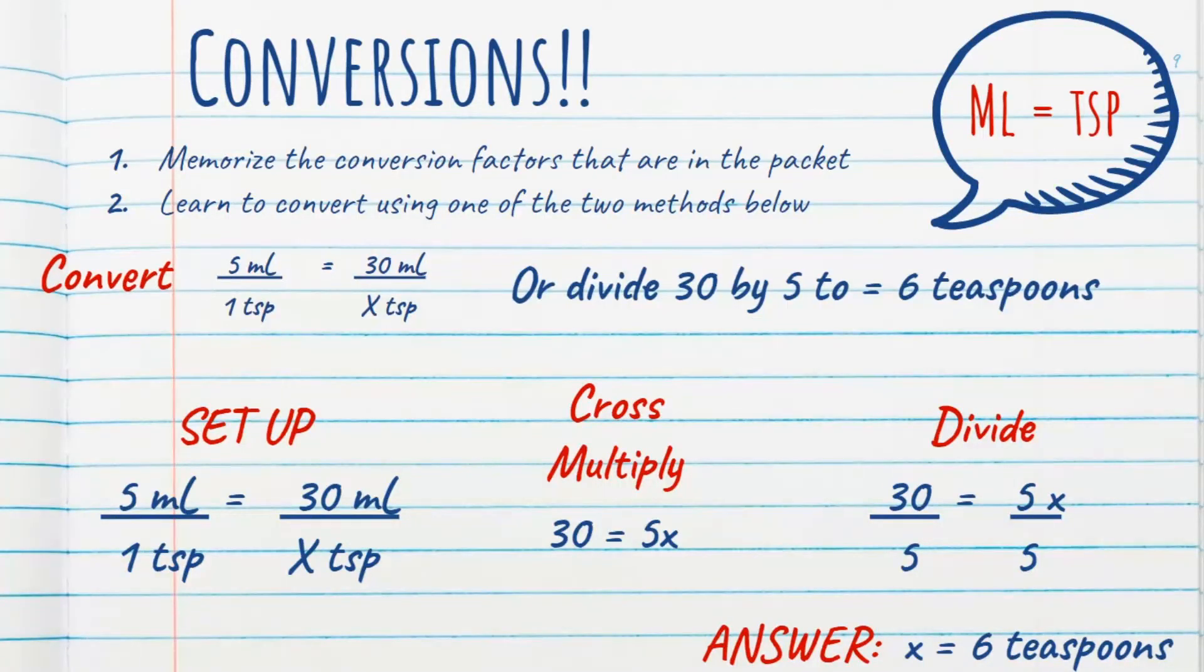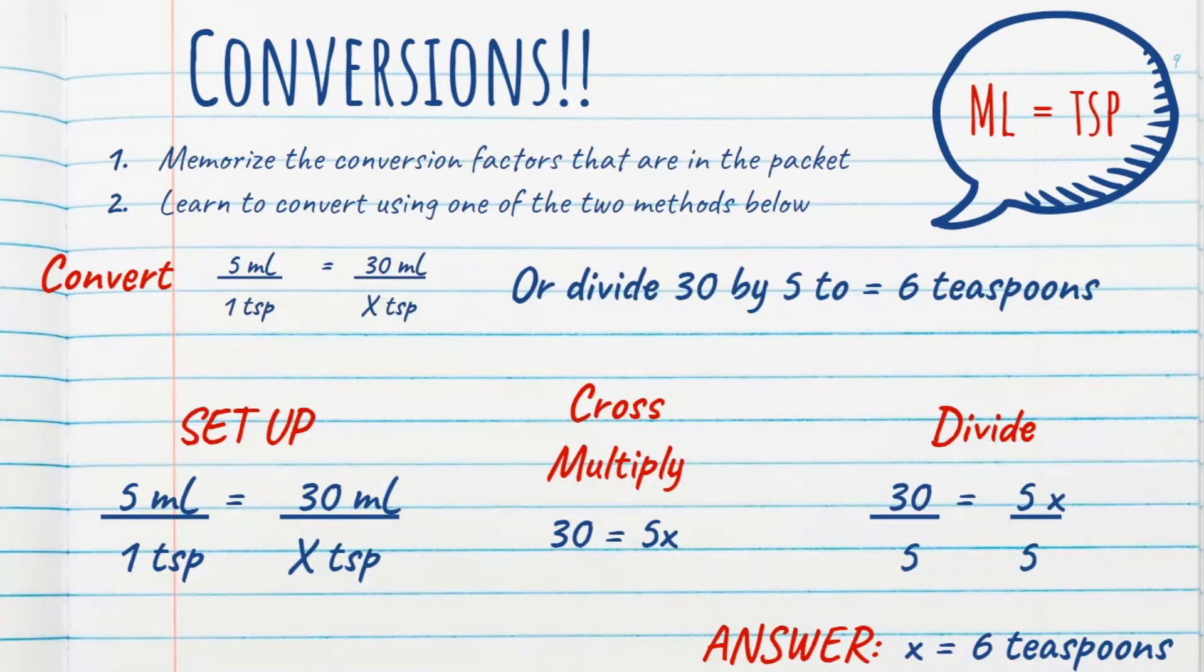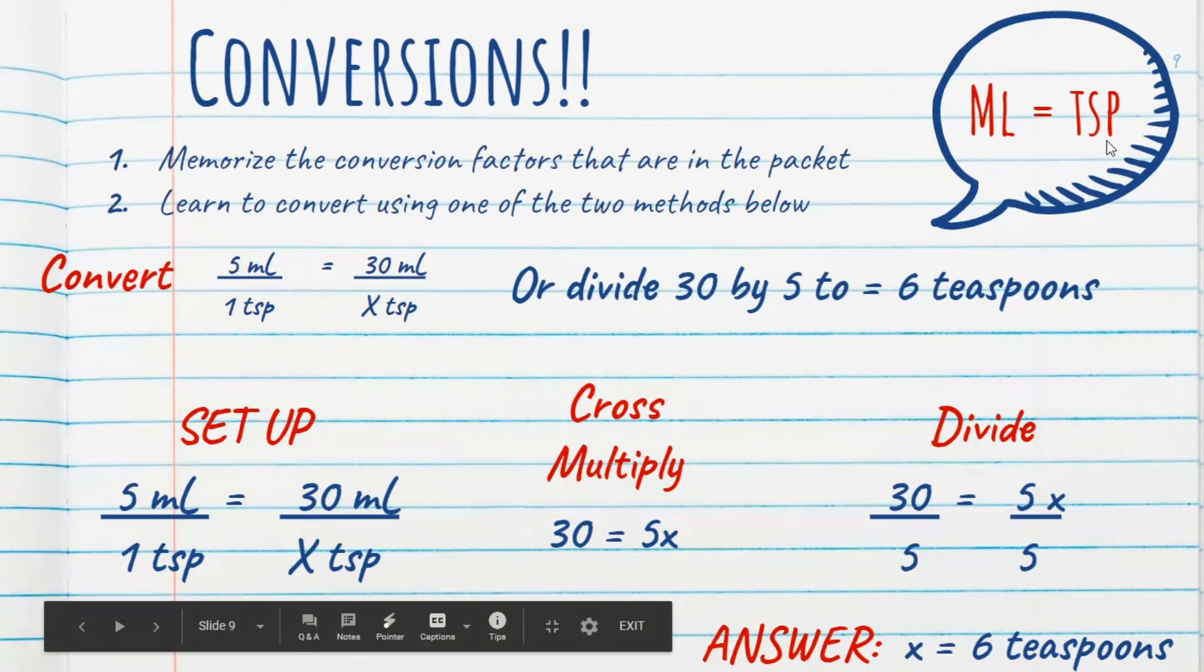All right. So if you didn't understand what I said about the conversions, I'm going to go over that now. Remember, you have to memorize those conversion factors. Some of them, you can kind of fudge and maybe know one of them and figure out the other one. But there are some that you just have to know. You have to learn to convert using one of these two methods. So we're going to focus on this example, milliliters to teaspoons.